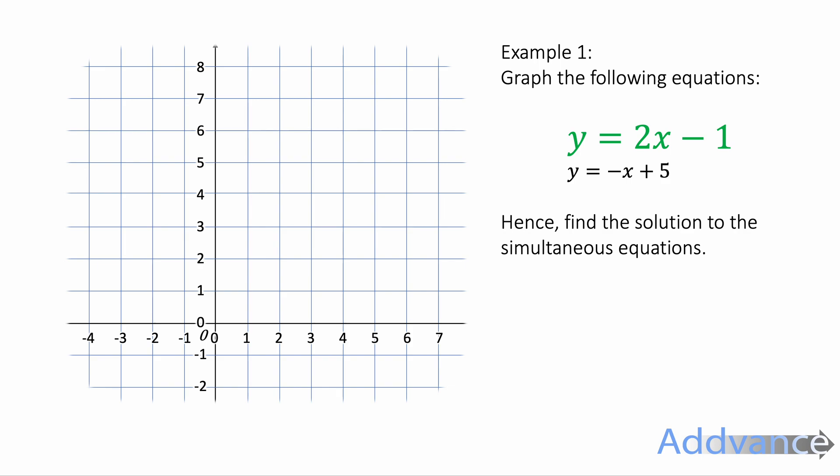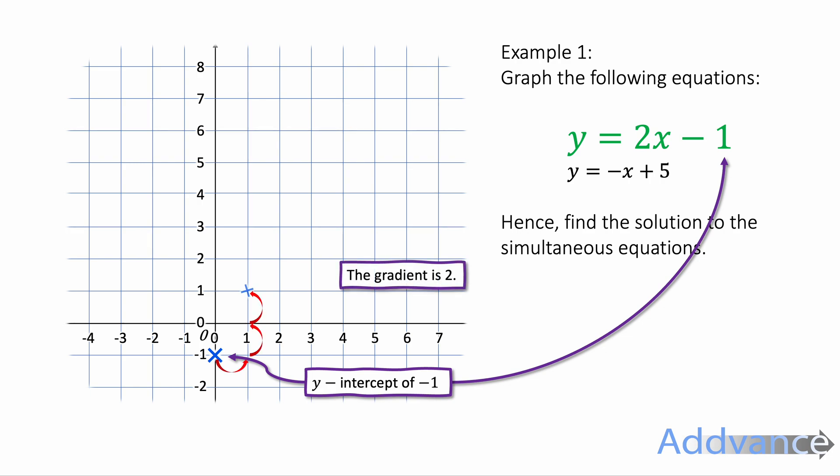The first one y equals 2x minus 1 has a y-intercept of minus 1. So it's definitely going to go through 0 minus 1, that coordinate there. It's also got a gradient of 2. So if it goes across 1 square it's going to go up 2 like that. And so it's going to go through those two blue points there. And we can connect those up with a ruler.